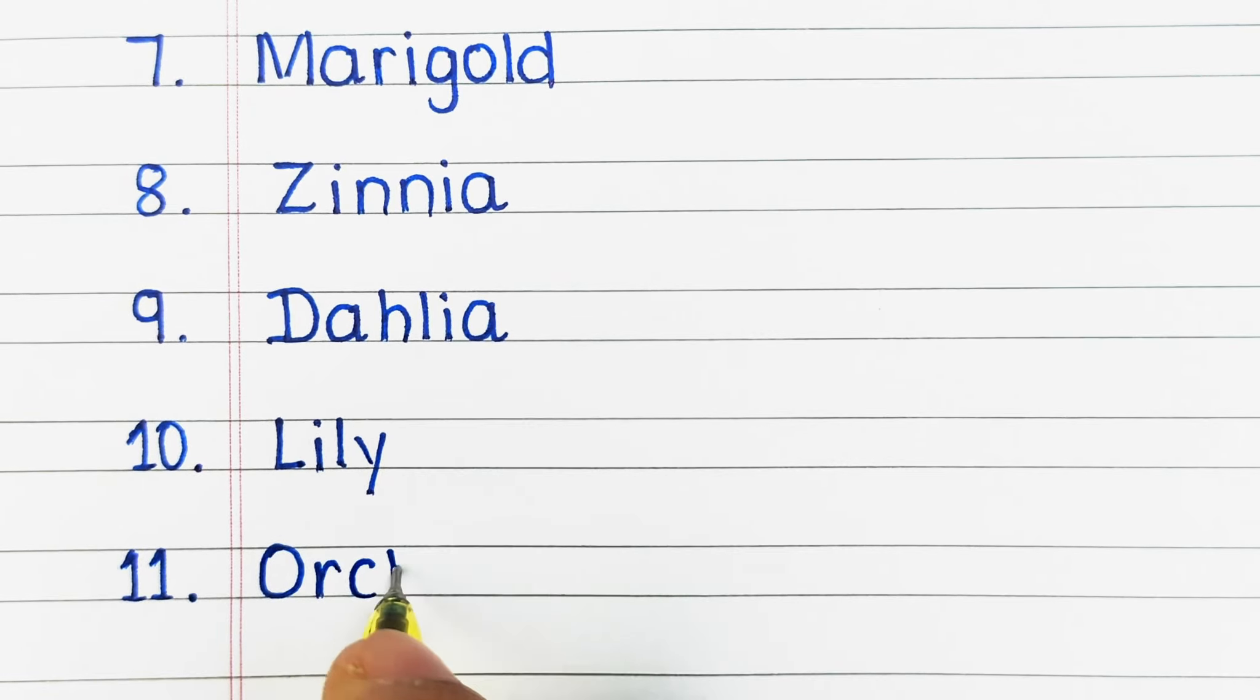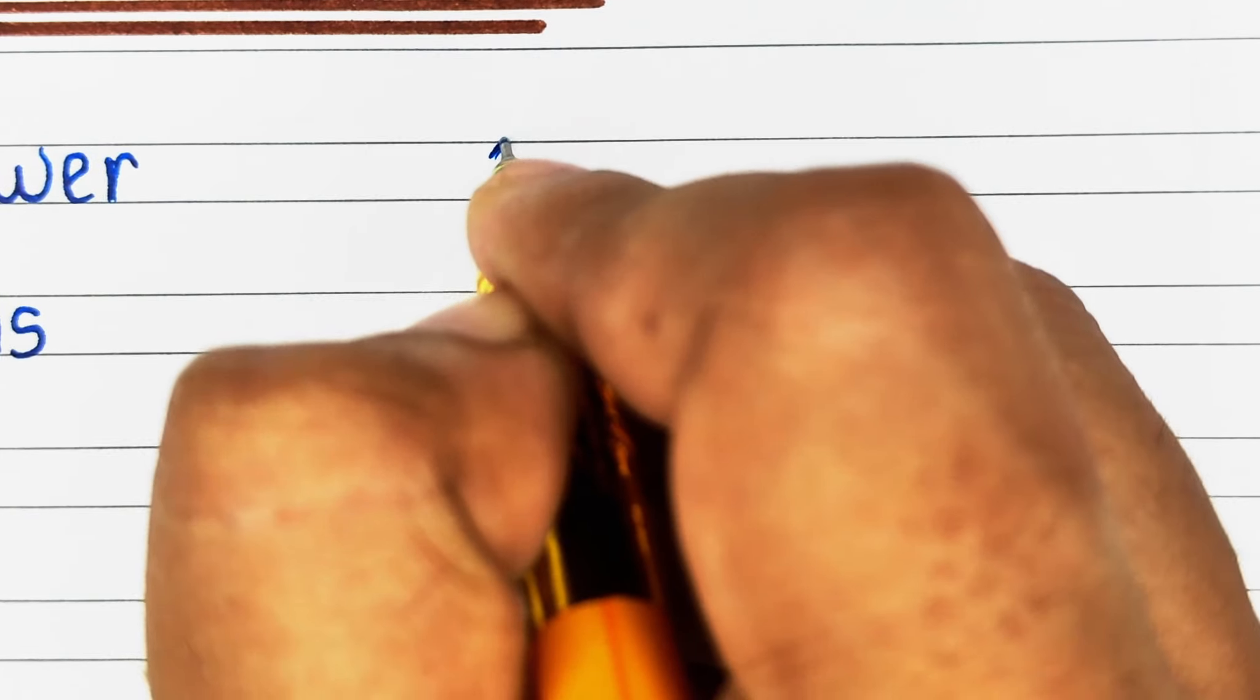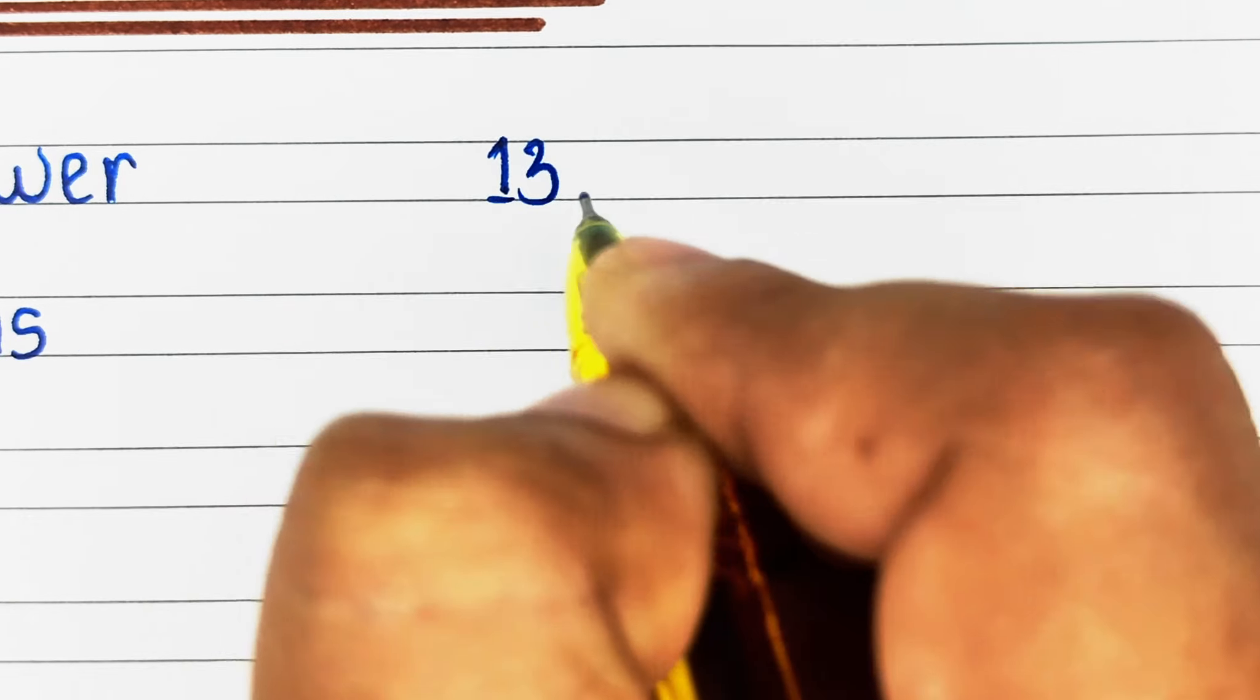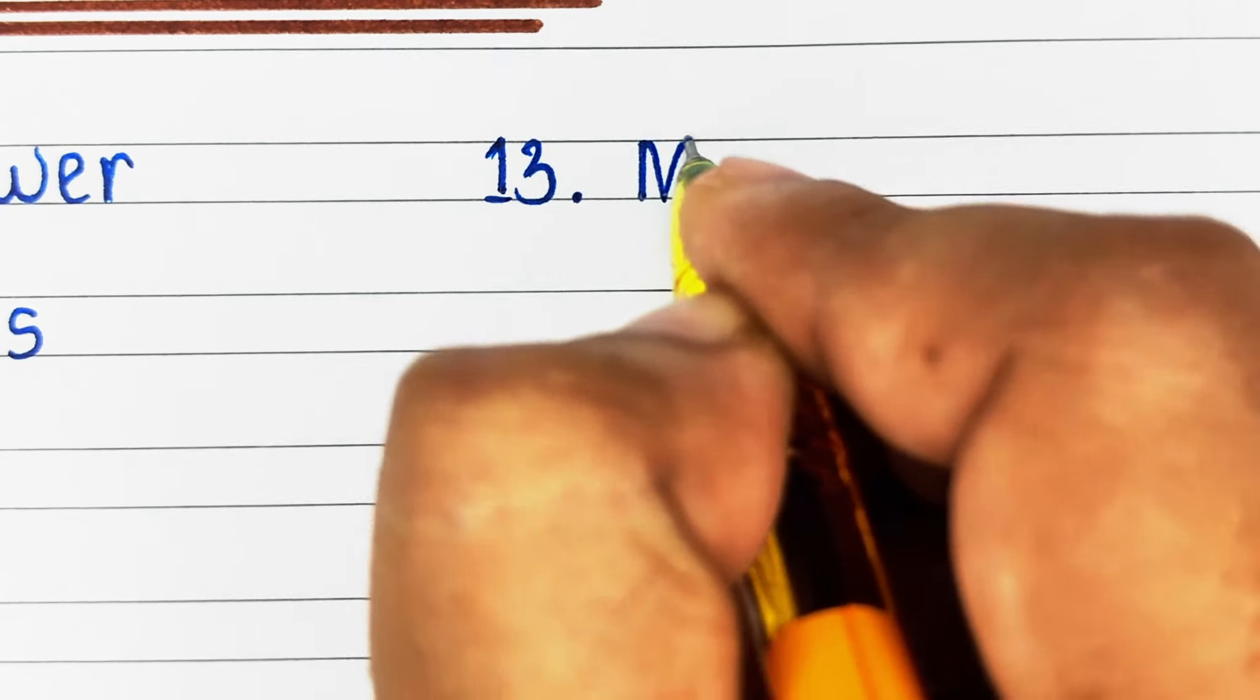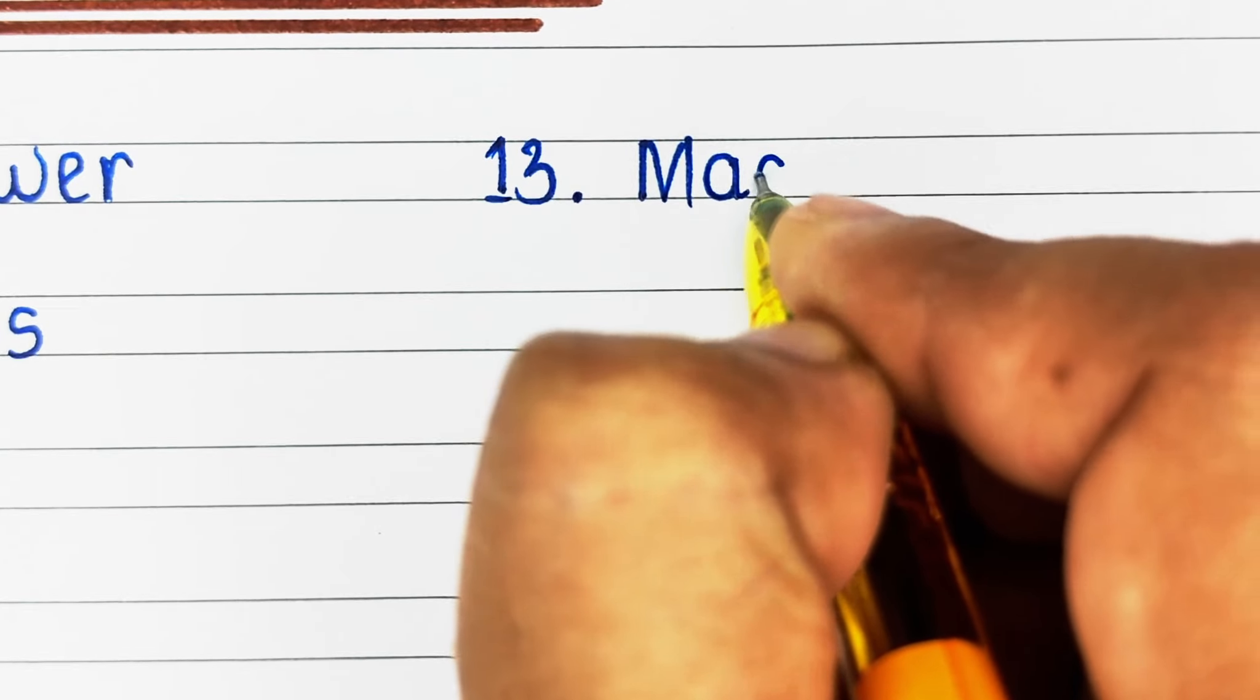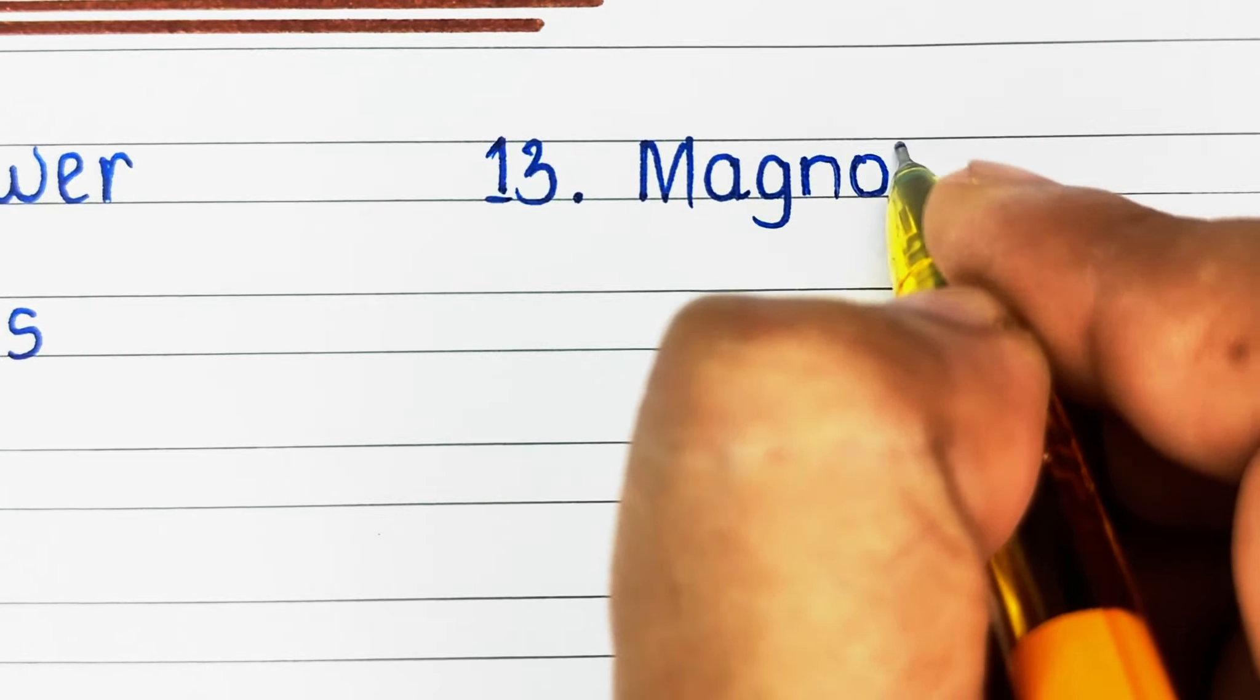Twelfth one is D-A-F-F-O-D-I-L, Daffodil. On number 13, we have M-A-G-N-O-L-I-A, Magnolia.